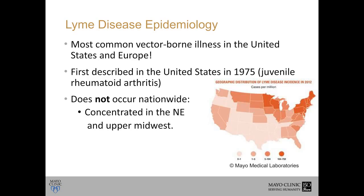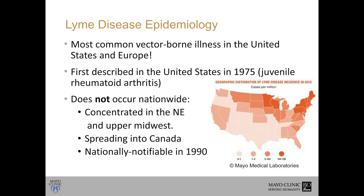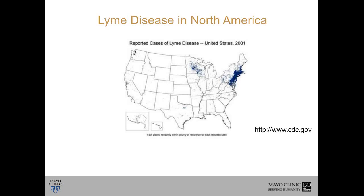You can see the distribution on the map here, where darker colors show the states with more cases of Lyme disease. It's also spreading up into Canada. Lyme became a nationally notifiable disease in 1990, so we've been able to track the number of cases reported to the CDC — the Centers for Disease Control and Prevention — every year, giving us good data.